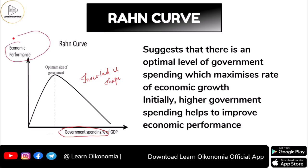Along the x-axis we measure government spending as a percentage of GDP, and along the y-axis we measure economic performance. As per this curve, there is an optimal level of government spending, and that optimal level of government spending would maximize economic growth.